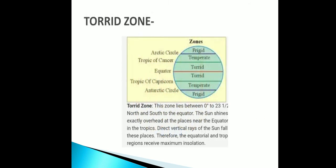The Torrid Zone lies between 0° to 23.5° north and south of the equator. The sun shines exactly overhead at places near the equator in the tropics. Direct vertical rays of the sun fall on these places; therefore the equatorial and tropic regions receive maximum insolation.